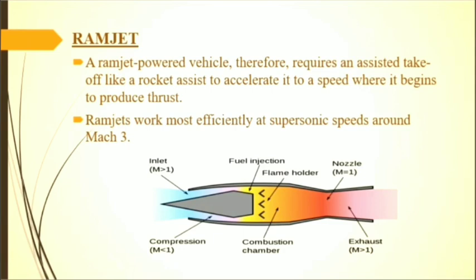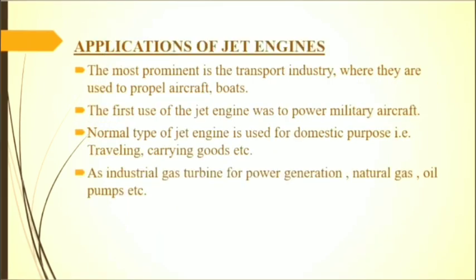A ramjet-powered vehicle requires an assisted takeoff like a rocket in order to accelerate it to a speed where it begins to produce thrust. Ramjets work most efficiently at supersonic speeds, around Mach 3.